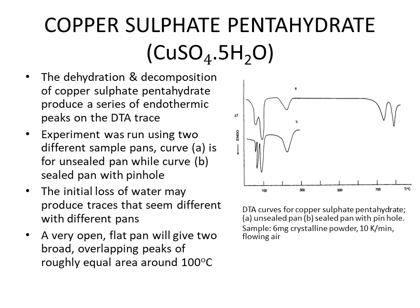The second example is copper sulfate pentahydrate. The DTA curve is shown on the right side. There are two DTA curves because the compound was run with two different types of pans. Curve A was obtained using an unsealed open pan, and curve B was obtained using a sealed pan with a pinhole. Six milligrams of crystalline powder was used for each run, the heating rate was 10 Kelvin per minute, and the atmosphere was flowing air.